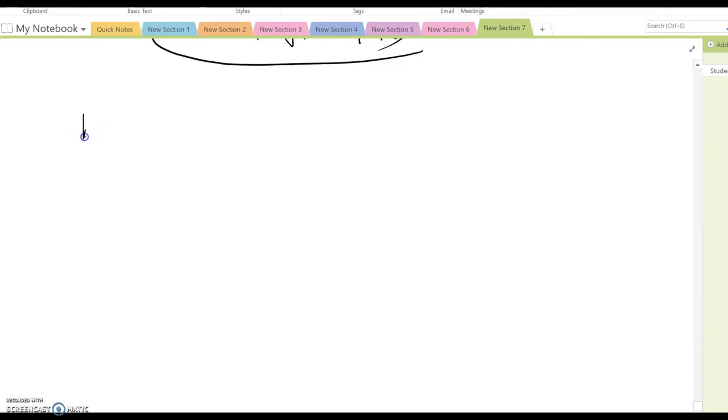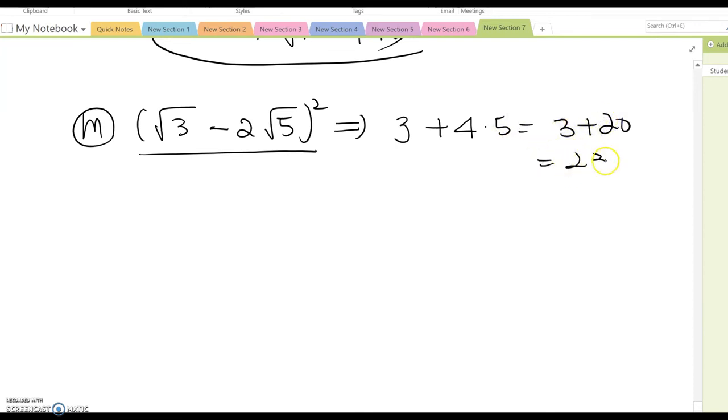What about M? M is square root W minus 2 root 5 squared. Okay, if you think this answer is 3 plus 4 times 4 times 5, and then 3 plus 20 equals 23, then this is totally wrong. Because whenever you see like that, you must multiply the same thing twice. That's what this means.